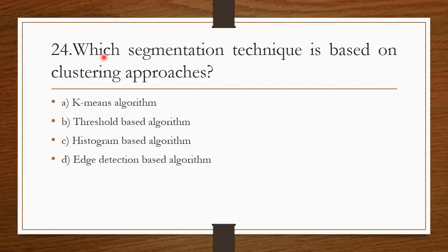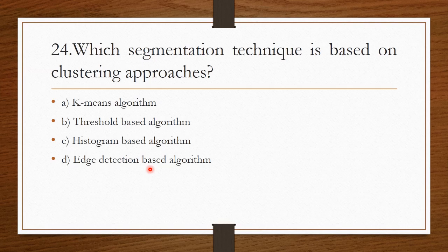Question 23: Which segmentation technique is based on clustering approaches? Option A: K-means algorithm. Option B: Threshold based algorithm. Option C: Histogram based algorithm. Option D: Edge detection based algorithm. The correct answer is Option A — K-means algorithm.